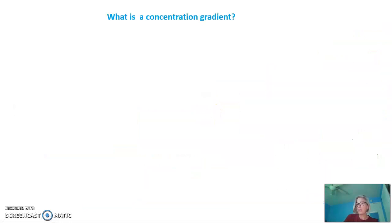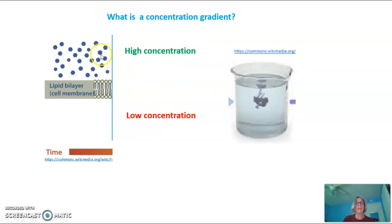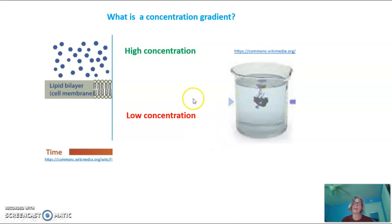The second requirement for diffusion across a membrane, in addition to the substance being permeable to the membrane, is a concentration gradient. A concentration gradient is when there is a high concentration of substances or molecules in one location and a low concentration in another. We can look at this across a membrane, or in the original diagram of the purple dye diffusing — when that process first started, there was a high concentration of purple dye in the middle and a low concentration in the rest of the beaker. We would call this a concentration gradient because there is a distinct high and low concentration of purple dye.